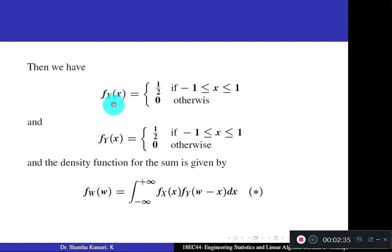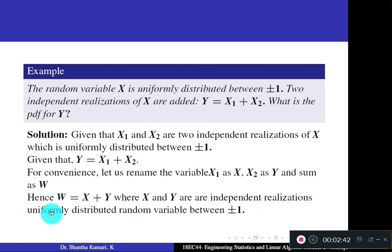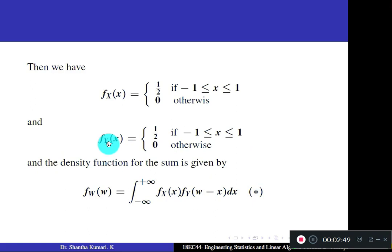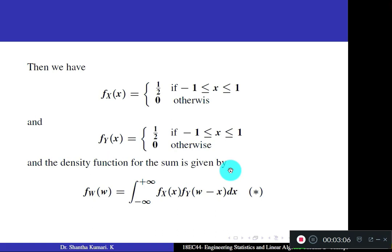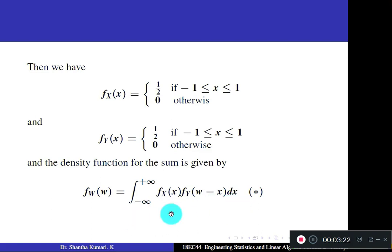Again, y is also a uniform random variable in the same interval. Both x and y are independent realizations of the uniform random variable between −1 and 1, so for y also you get the same PDF: 1/2 if x is between −1 and 1, and 0 otherwise. The PDF for the sum of two independent random variables is given by fw(w) = integral from −∞ to ∞ of fx(x)·fy(w−x) dx — this is the convolution of fx and fy. Remember this formula; it is very important.